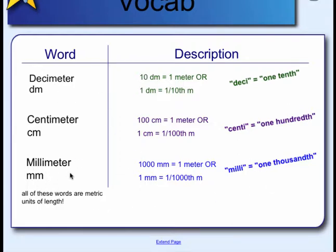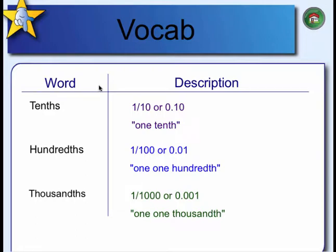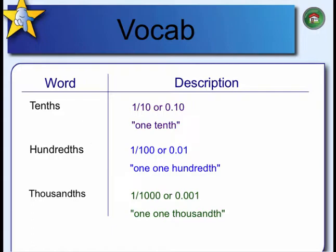So decimeter, centimeter, millimeter — these are all words we use in the metric system of measurements. If you think back to decimals, you know that a tenth is written as one-tenth in fraction form or 0.1 in decimal form. Hundredths you'll see written as the fraction one over one hundred, or one one-hundredth. Thousandth means one over one thousand, or you can read it one one-thousandth.